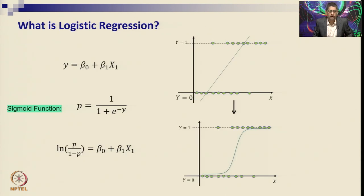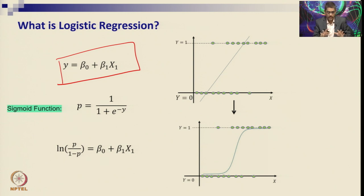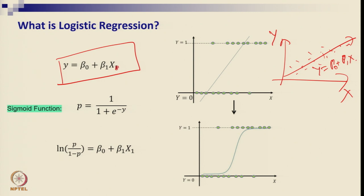Let us illustrate how this calculation is done and how the method of logistic regression is developed. This is the basic regression: if you have data with x and y, you can fit a line y = β₀ + β₁x. But if your y data are plotted in clusters — most observations falling in distinct groups — then fitting a straight regression line becomes problematic because the line goes to infinite range, both up and down.